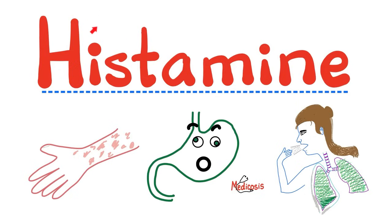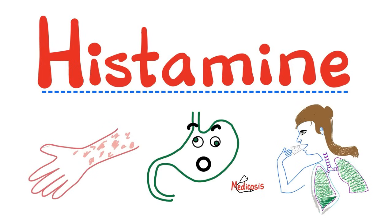Remember that neoplasias could be benign or malignant — i.e., cancerous. We covered cell injuries such as hypoxia and the different types of hypoxia, and the difference between hypoxia and hypoxemia. Cell death could be apoptosis and necrosis. We have talked about all of this before. Then we started a series on acute inflammation, the inflammatory mediators, and the cytokines, including the interleukins, and more.